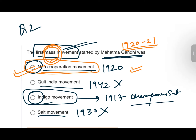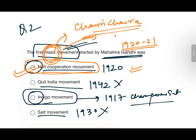Many women participated in the Non-Cooperation Movement. Women held dharnas (protests) outside liquor shops. Prominent women organizers included Urmila Devi and Sunita Devi. You should also know that due to the Chauri Chaura incident, Gandhi called off this movement in 1922, which made many people very angry with Gandhi Ji.